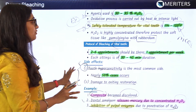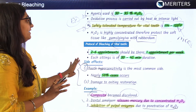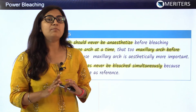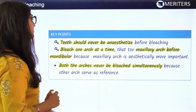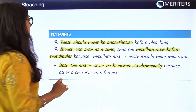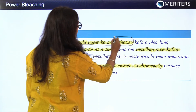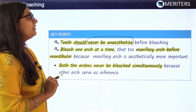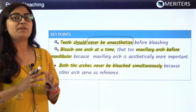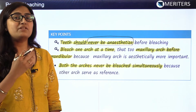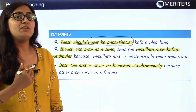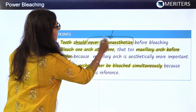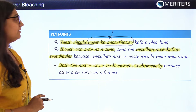These are the side effects of the vital bleaching technique — remember, these are all very important. Another key point: a vital tooth should never be anesthetized before bleaching. The reason is that communication between the dentist and the patient is lost. If the patient feels any burning due to the bleaching agent, they would not be able to communicate if anesthetized. So it should never be anesthetized before bleaching.